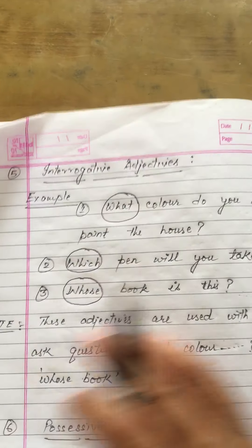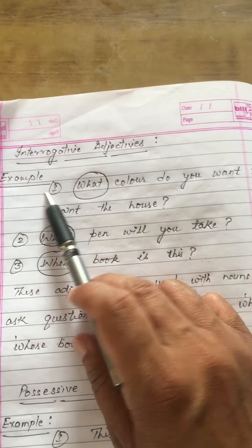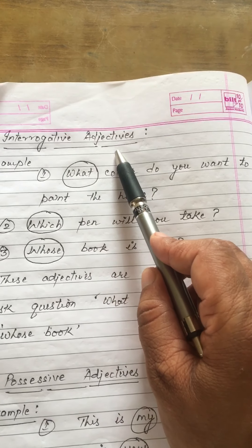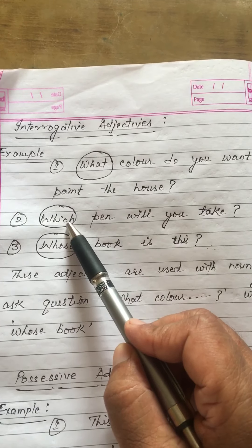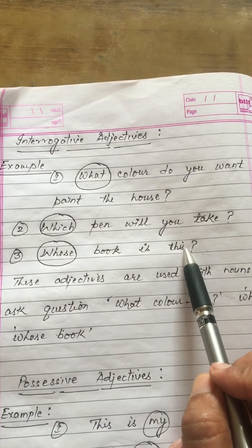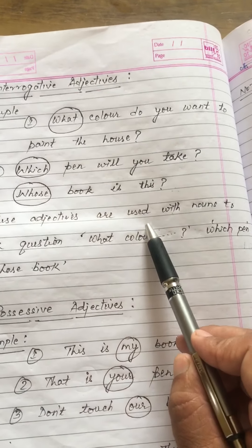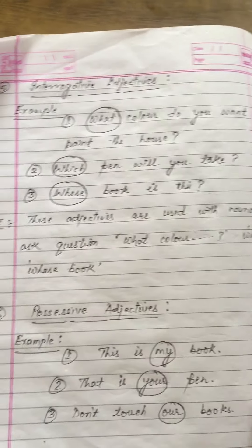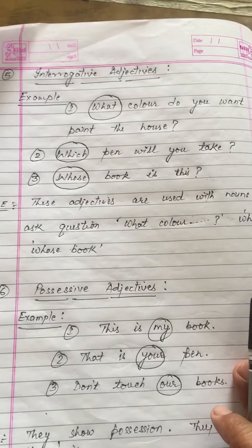The next type is Interrogative Adjectives. As the name suggests, these adjectives ask questions. Example: 'What color do you want to paint the house?' — 'what color' is your interrogative adjective. 'Which pen will you take?' — 'which' is your interrogative adjective, asking about which pen. 'Whose book is this?' — 'whose' is your interrogative adjective. These adjectives are used with nouns to ask questions: what color, which pen, or whose book.